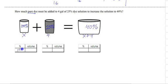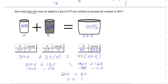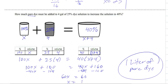So now we multiply, multiply, and multiply. So it's 100x plus 25 times 4 equals 40 times x plus 4. And that's our setup. So if you solve it, you get 1 liter of pure dye. That's how much should be made.